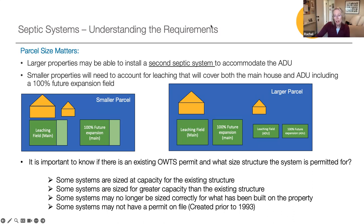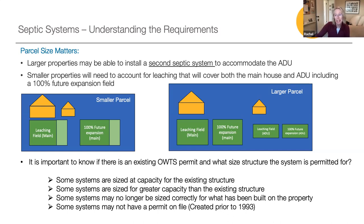Some systems won't have a permit on file at all, particularly if they were created before 1993. A site evaluation will be needed to determine the type and size of system you have, in order to determine the type and size of system you need to allow for the development of an ADU.